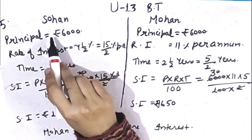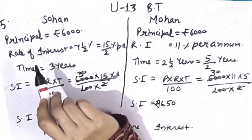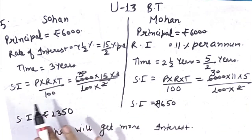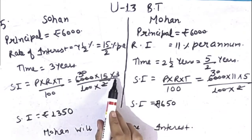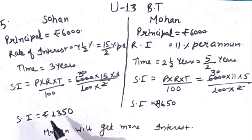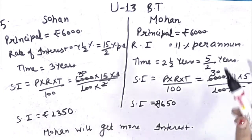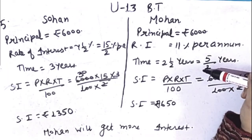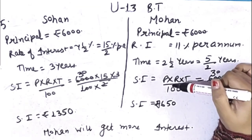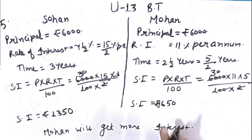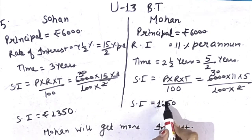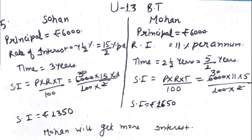Listen again. For both Sohan and Mohan, principal, rate of interest, and time are given. For Sohan, simple interest came out to Rs.1,350 using formula principal × rate × time ÷ 100, after cancellation and multiplication. Similarly for Mohan, simple interest came out to Rs.1,650. So simple interest for Mohan is more. Write: Mohan will get more interest.